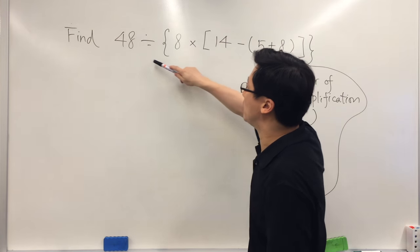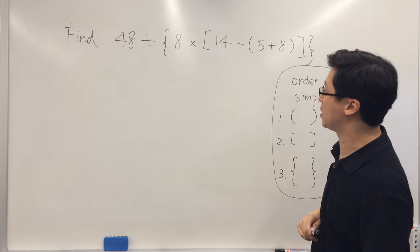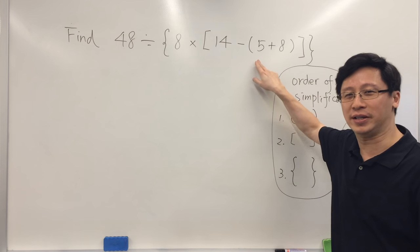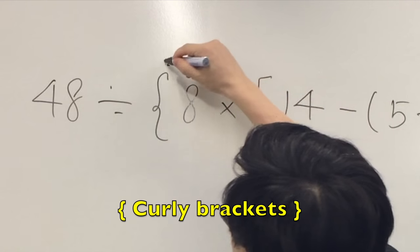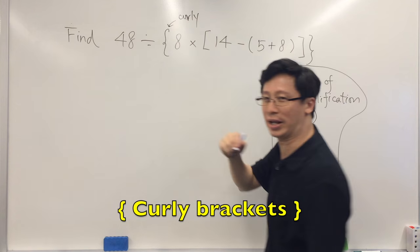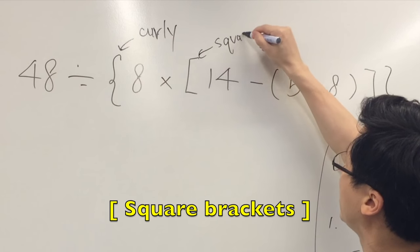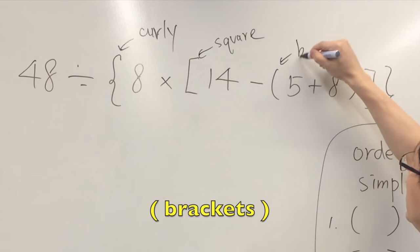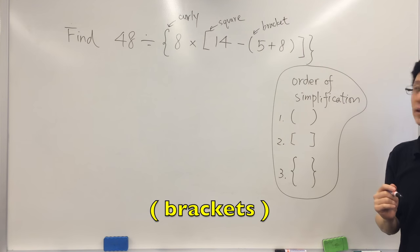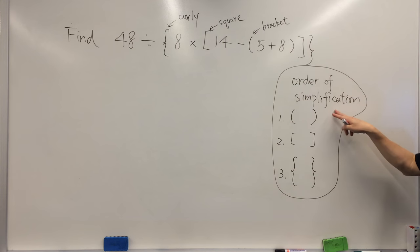Now let's look at another example to see if we can find the value of this expression. We have three different types of brackets here. This is called the curly bracket, and this one we call a square bracket, and finally this is just the usual normal bracket.